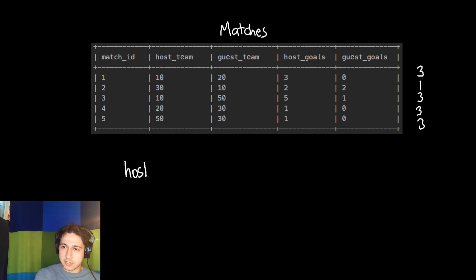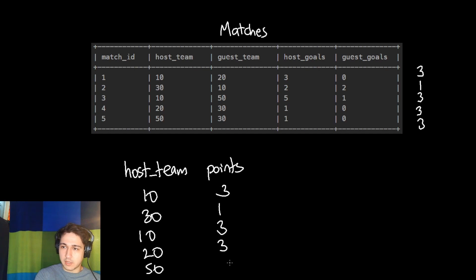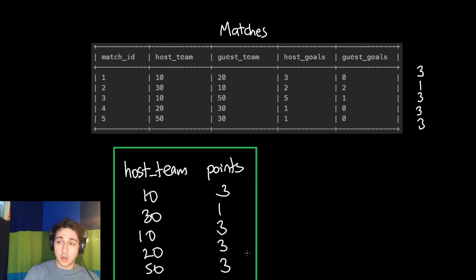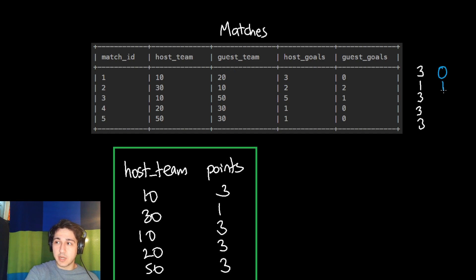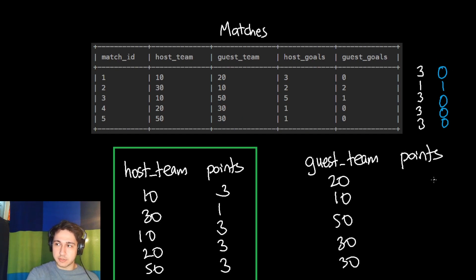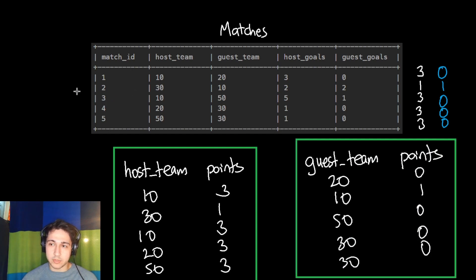Let's make a table with the host team and how many points they got. Team 10 got three for the first game, team 30 got one for the second, team 10 got three again for the third, and so on. But the guest team could also have won or tied, so we need a second table for guest teams and their points: zero, one, zero, zero, zero. Now we have all possible points from the whole matches table.